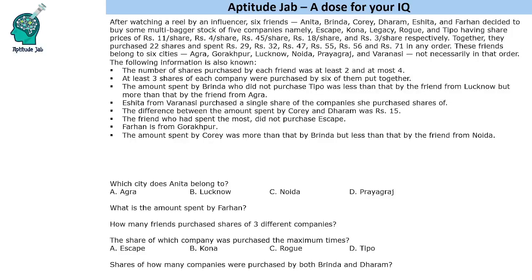Welcome to Aptitude. This problem says that after watching a reel by an influencer, six friends decided to buy some multi-bagger stock of five companies. These companies are named and their share prices are given. They purchased 22 shares total and spent specific amounts. These friends belong to six cities, and we need to map the cities and find which shares were purchased by which friend.